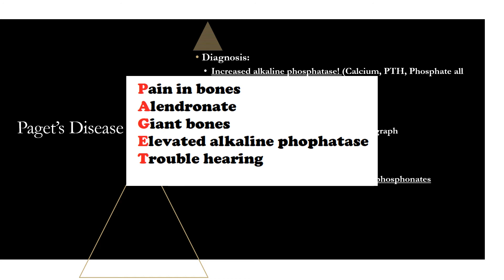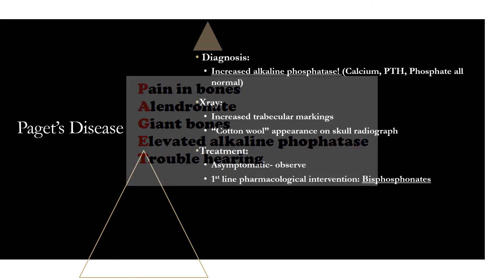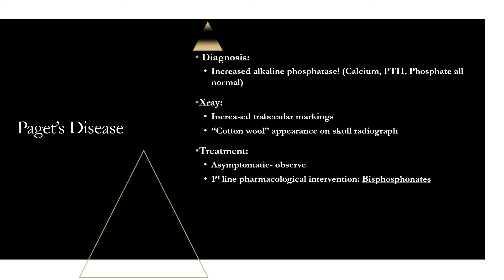A mnemonic using PAGE T: P for pain in bones, the most common symptom; A for alendronate, the bisphosphonate treatment; G for giant bones, which get enlarged in these patients; E for elevated alkaline phosphatase, the key lab finding; T for trouble hearing, the hearing loss these patients may experience.